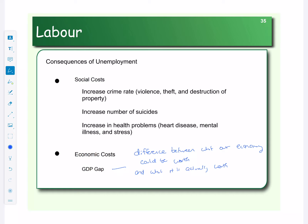We actually have a name for the size the economy could be. What is that measurement of how big the economy could be if we utilized all of our land, labor, capital, and enterprise? Well, what our economy could be worth is called potential GDP. So we can look at potential GDP in dollar value — what would our economy be in terms of production if we used all of the land, labor, capital, and enterprise versus what it's actually worth. That is, what is our actual GDP? This difference is the GDP gap.